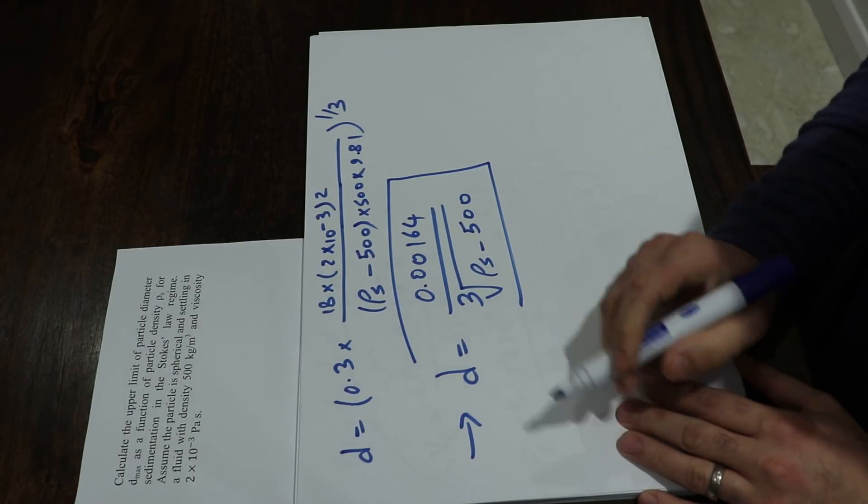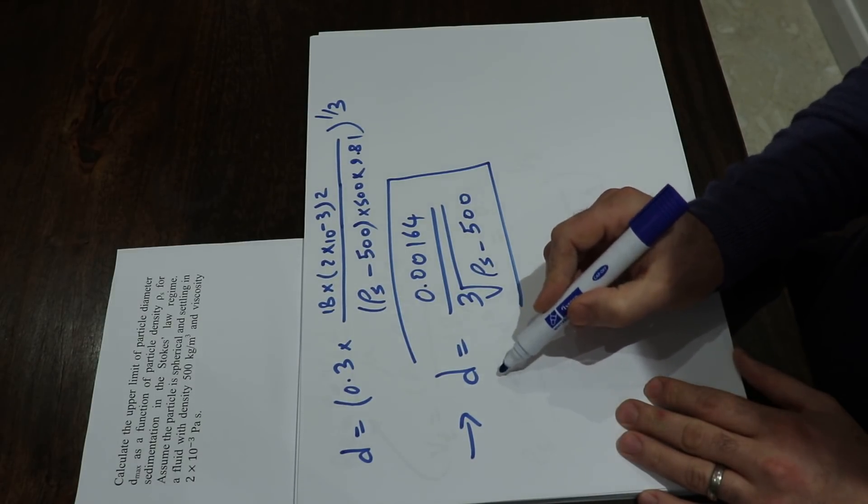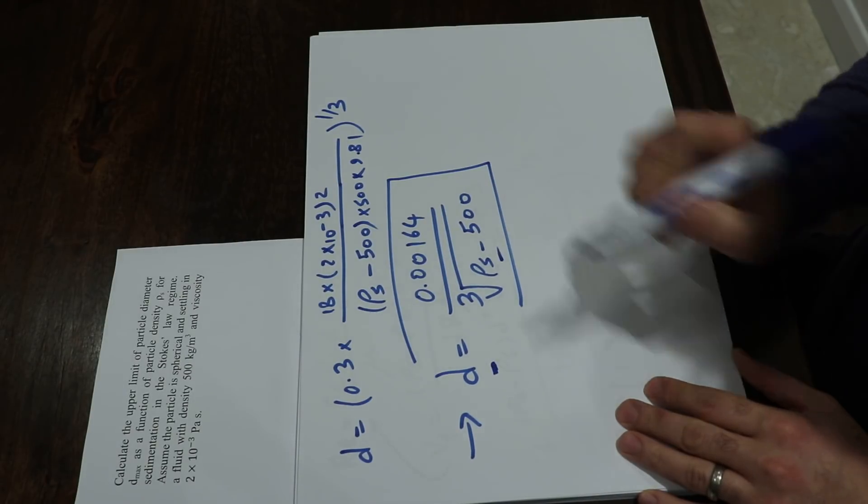The question was about calculating the upper limit of particle diameter as a function of the particle density.